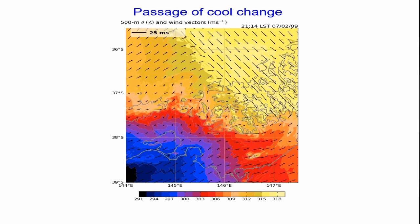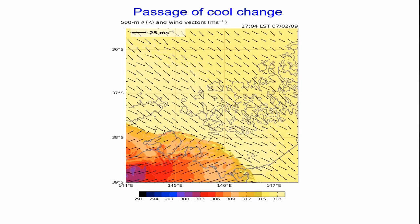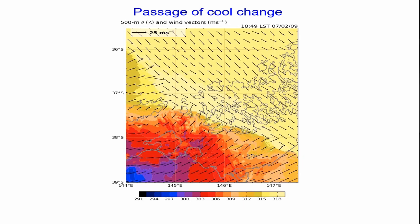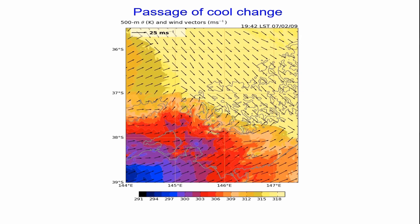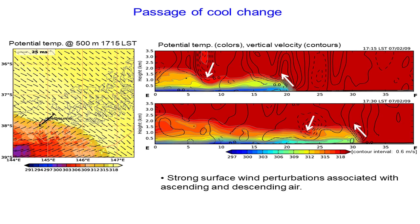What emerges right at the end of this animation is a little line moving ahead of the synoptic front in northern Victoria. This little line moves just ahead of the cold front — that's what's called an undular bore. It's a small-scale mesoscale feature that has separated from the synoptic front and moved just ahead of it.